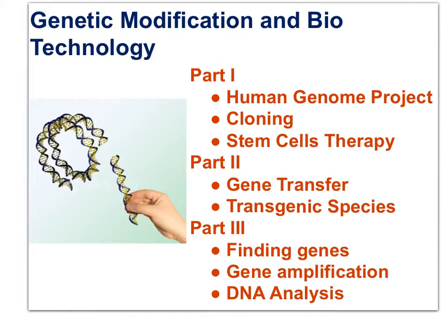Here is an outline of the three parts in this biotechnology series. Part 1 is focused on the human genome project, cloning, and stem cells. Part 2 looks at gene transfer and transgenic species, while Part 3 looks at how we find genes, gene amplification, and DNA analysis.